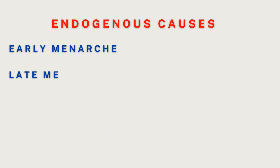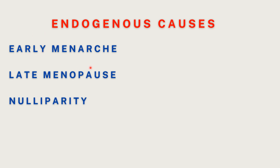Further endogenous causes include early menarche, late menopause, and nulliparity. Early menarche and late menopause mean women are exposed to estrogen for a longer period throughout their lifetime, increasing the risk of endometrial cancer. In nulliparity — never having been pregnant — during pregnancy there is no menstruation, so at least during those nine months there is less estrogen exposure. Nulliparous women are therefore exposed to more estrogen over their lifespan compared to multiparous women.